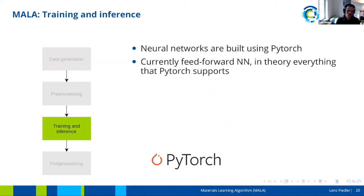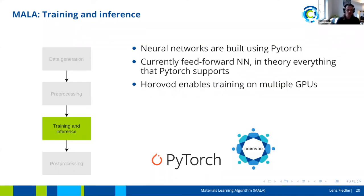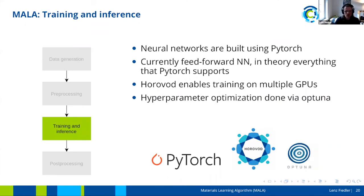Models are built using PyTorch. Currently MALA uses only feed-forward neural networks, but in theory everything PyTorch supports could be used. We use Horovod to enable training on multiple GPUs, and we perform hyperparameter optimization using Optuna. Hyperparameters are the parameters describing the network architecture and training procedure — for example, how many layers there are, how many neurons per layer, or how backpropagation is performed. We also include novel approaches to hyperparameter optimization, such as orthogonal arrays and training-free hyperparameter optimization.